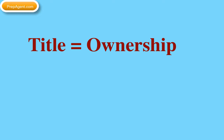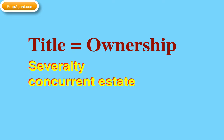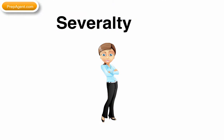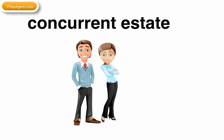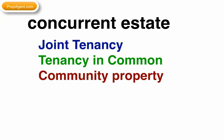Title is ownership. Title can be held in severalty or a concurrent estate. Severalty is sole or independent ownership by a person or entity — that means there is only one name on the deed. The concurrent estate describes the various ways in which property can be owned by more than one person at a given time. Three types of concurrent estates are joint tenancy, tenancy in common, and community property.